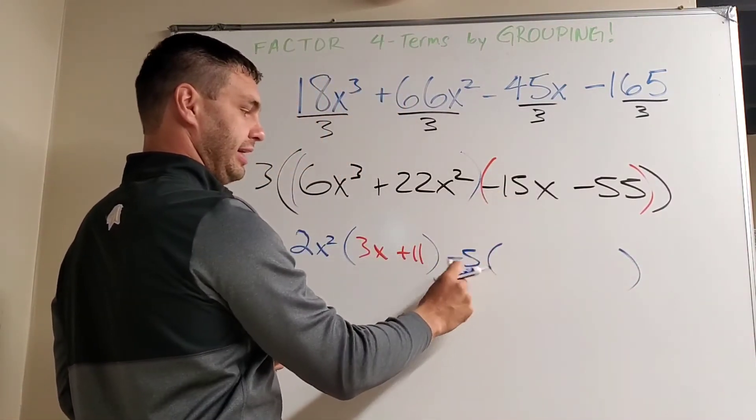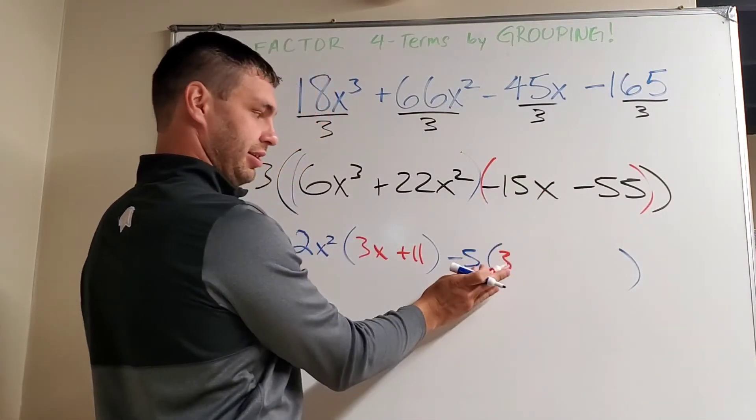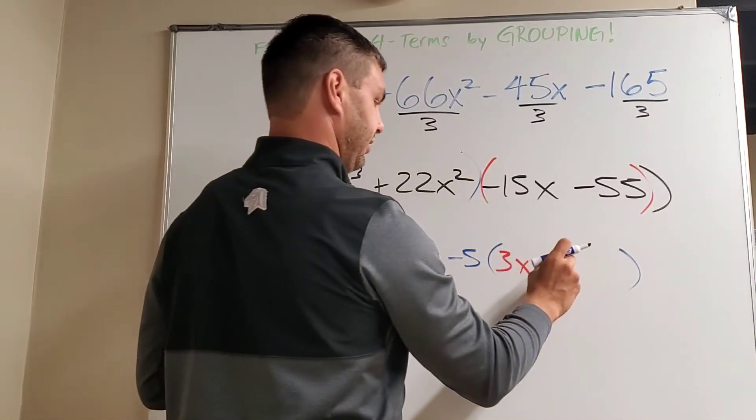negative 15 divided by negative 5 is 3. Then x divided by, there is no x here, so the x comes down. Negative 55 divided by negative 5 is positive 11. Negative divided by a negative is a positive.